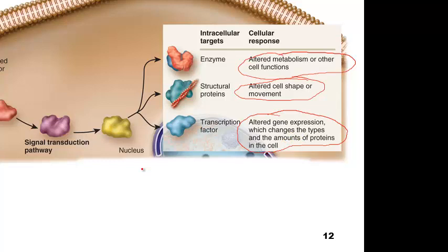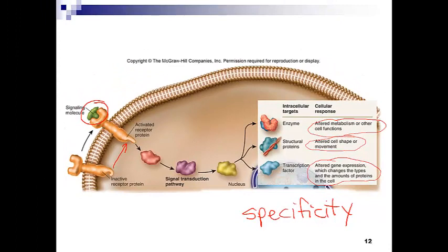One important point to get across: specificity is extremely important. It's not one receptor for every possible signal — there's no way a cell could distinguish what's happening in the environment that way. Each signal molecule has its own receptor, which causes a unique response, allowing a cell to fine-tune its regulatory steps and its response. This will be important as you see examples of the cAMP pathway and the calcium pathway, which you'll view next.